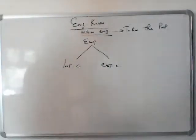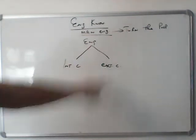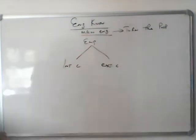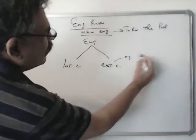One is internal combustion and one is external combustion. Internal combustion is where the combustion, means burning of the fuel, takes place inside the engine. And external is where the combustion takes place outside the engine, for example steam engines.